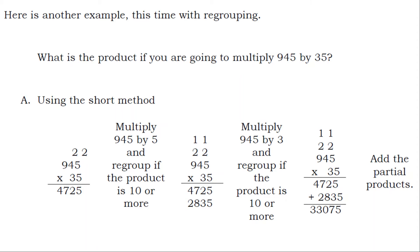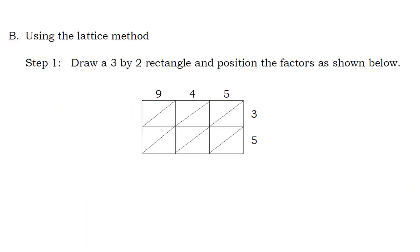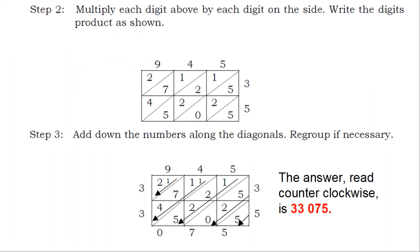Lastly, add the partial products. Using the lattice method: Step 1, draw a 3 by 2 rectangle and position the factors as shown. Step 2, multiply each digit above by each digit on the side and write the digit's product as shown. Step 3, add down the numbers along the diagonals and regroup if necessary.